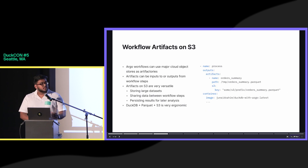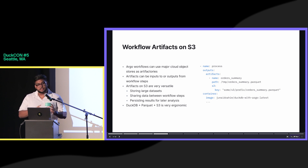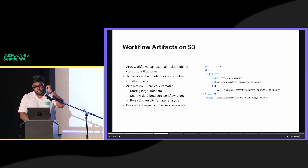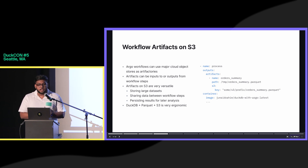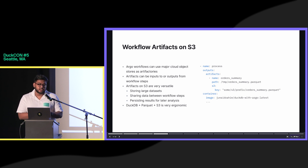Another cool feature of Argo Workflows is that it has very good support for artifacts on any major cloud object storage. So you can take S3, and as you can see in that example, you could just point to a path inside the pod and Argo Workflows will take care of making sure the file on that path is written to S3. These artifacts can act as inputs or outputs to every stage of a pipeline, so every stage can write artifacts to S3 and read from that.